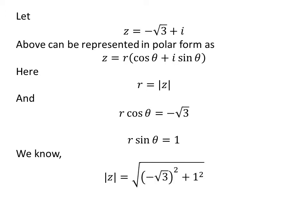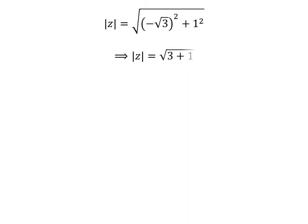As per the definition, modulus of z is equal to square root of square of minus square root of 3 plus square of 1. As square of minus square root of 3 is 3 and square of 1 is 1, so modulus of z is equal to square root of 3 plus 1. Square root of 4 is 2 and modulus of z is equal to 2 which is equal to r.